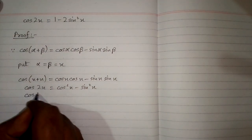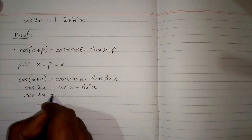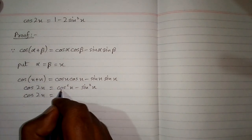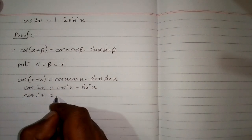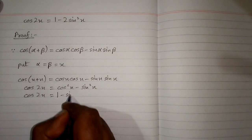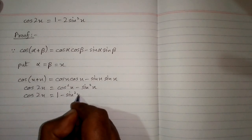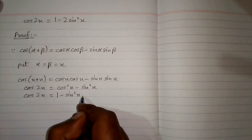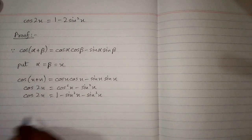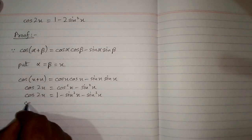Now cos 2x is equal to — in place of cos square x we can put 1 minus sin square x — and this minus sin square x will remain the same.